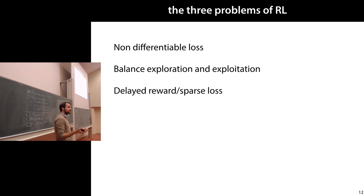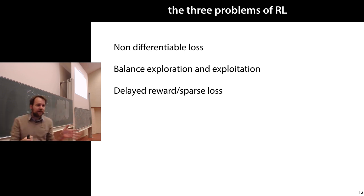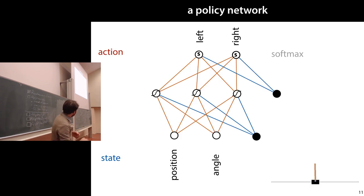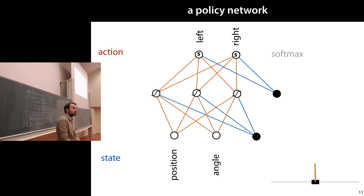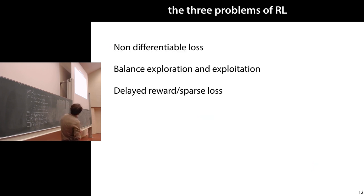This brings us to the three main problems that make reinforcement learning difficult. First, we have a non-differentiable loss. We can't just say we want to maximize the reward, put a minus in front of it, and backpropagate — because between the output of our neural network and the thing that gives us our reward are lots of non-differentiable things. Most importantly, the environment, which we don't have access to. Even if the simulator were differentiable, the ultimate goal is a real cart-pole, where the environment is the actual world. We cannot backpropagate through the real world.